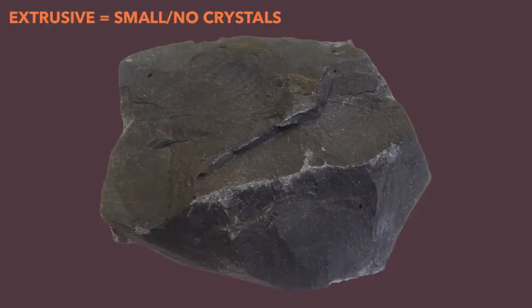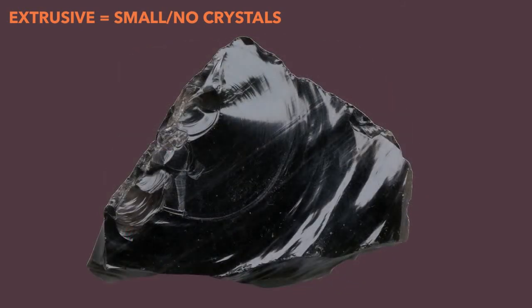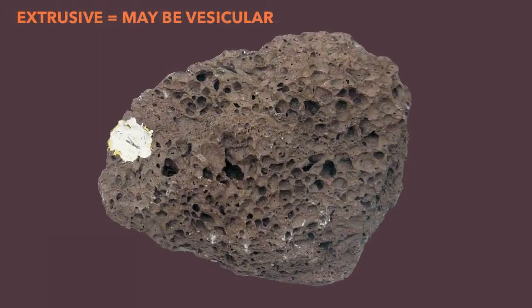This rock is called basalt. You'll notice you can't really see any crystals at all — if you look with a magnifying glass, you'd find really tiny ones smaller than a millimeter, which is a sign of an extrusive rock. What about this obsidian? It cooled so quickly, in a matter of seconds, that no crystals were able to form at all, giving it this glassy appearance. Finally, if lava cools quickly enough, you might get air bubbles trapped and become part of the rock in the form of vesicles, or vesicular texture.